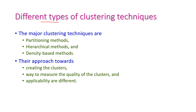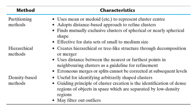Next, let us see the different types of clustering techniques. There are three major techniques. The first is the partitioning method, which uses the K-means or K-medoid algorithm, where means and medoid represent the cluster center. Based on the cluster center, it identifies the distance between the data point and cluster center to understand the size of the cluster and number of data inside. This partitioning method adapts a distance-based approach to refine the cluster and finds mutually exclusive clusters of spherical or nearly spherical shape. It is effective for small or medium-sized data sets.